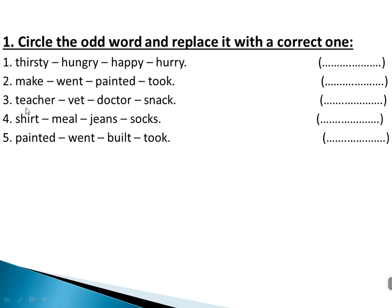Number three: teacher, vet, doctor, snack. All of them are jobs except 'snack'. You can replace it with 'nurse' or 'engineer'. Number four: shirt, meal, jeans, socks. All of them are clothes except 'meal'. You can replace it with 'shoes'.